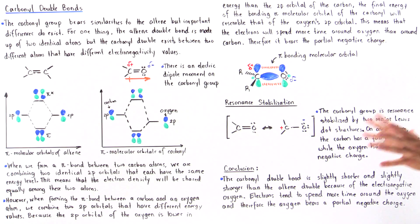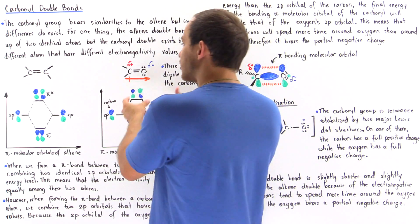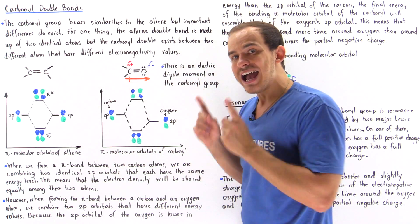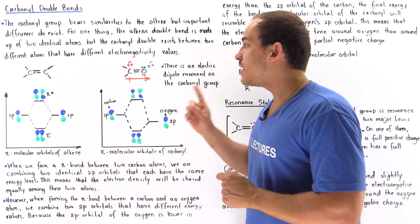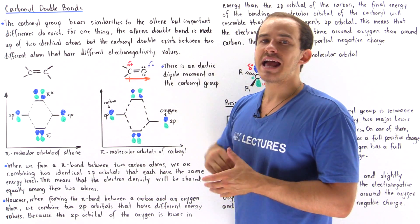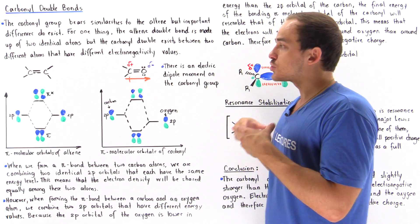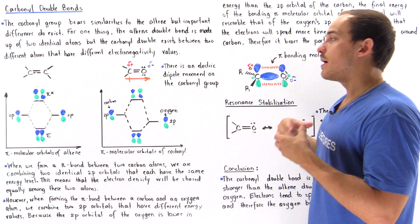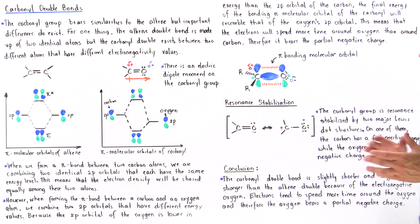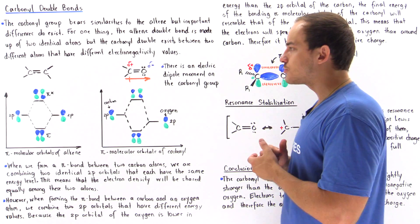The double bond inside the carbonyl is more reactive than the double bond inside the alkene, and we'll discuss more about the reactivity of the carbonyl group in the next several lectures.